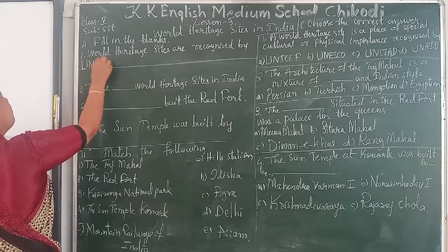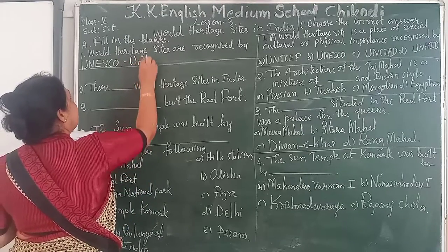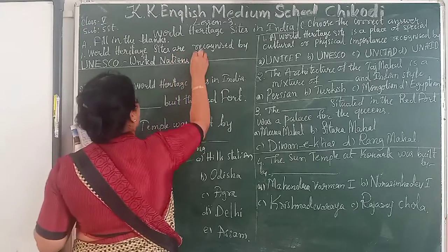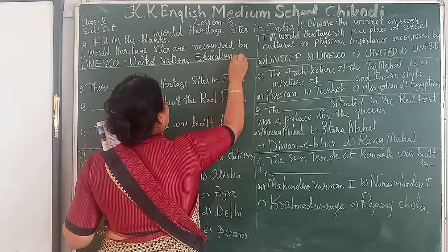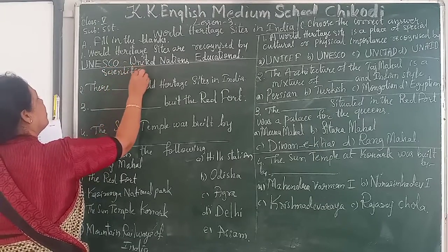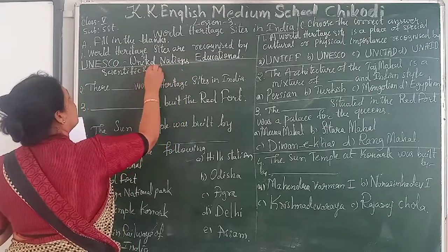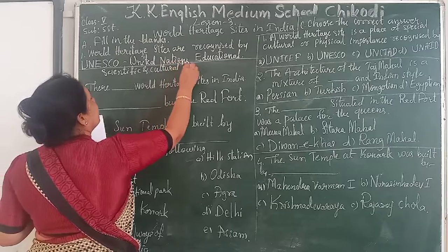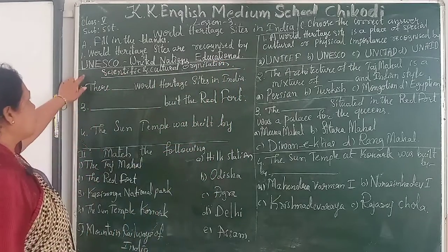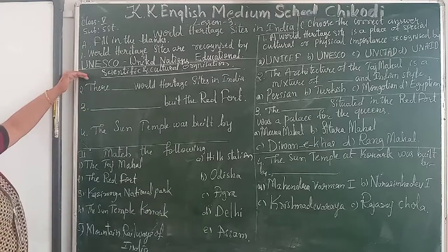The answer is UNESCO. We have to write down the complete long form of this: United Nations Educational, Scientific and Cultural Organization. So the first sentence is: the world heritage sites are recognized by UNESCO. This is the answer.